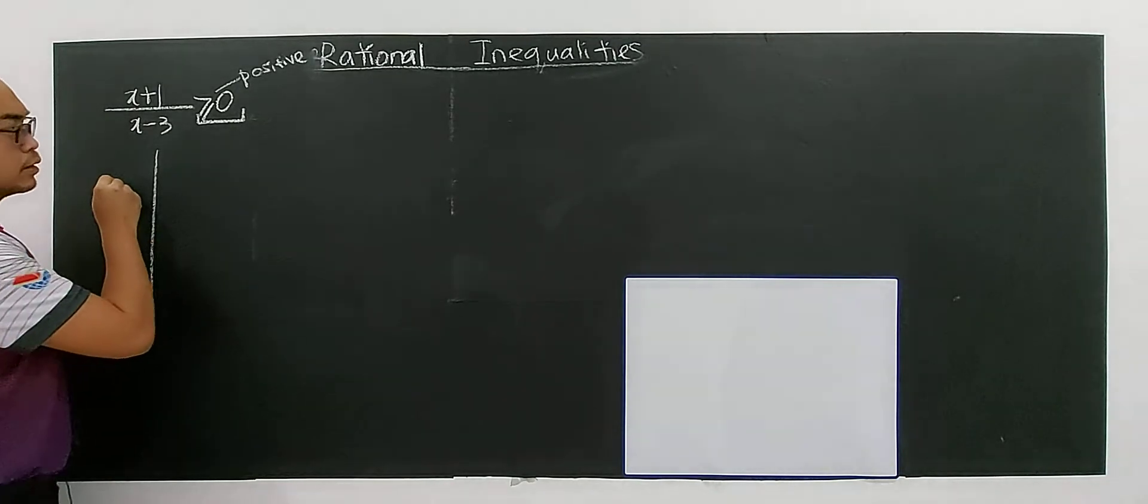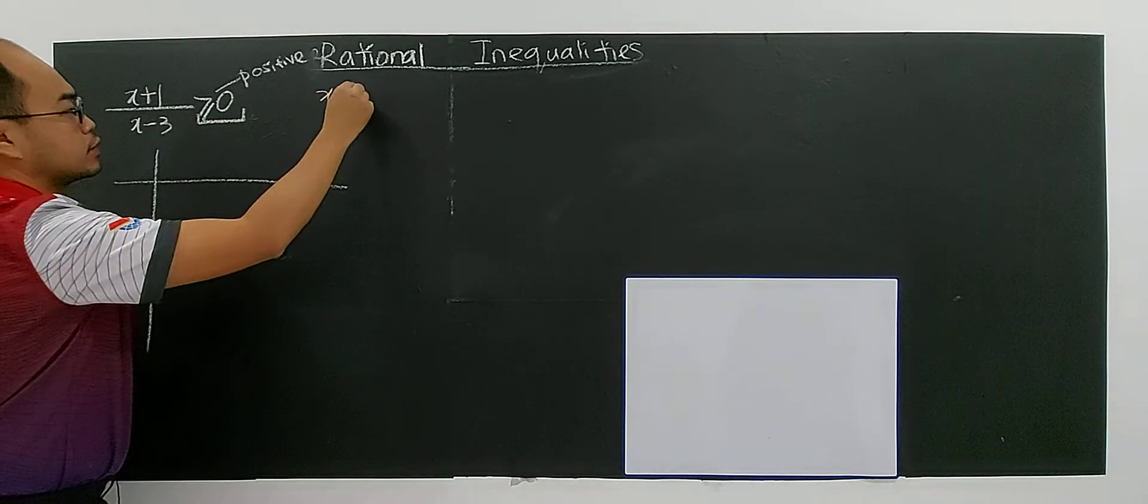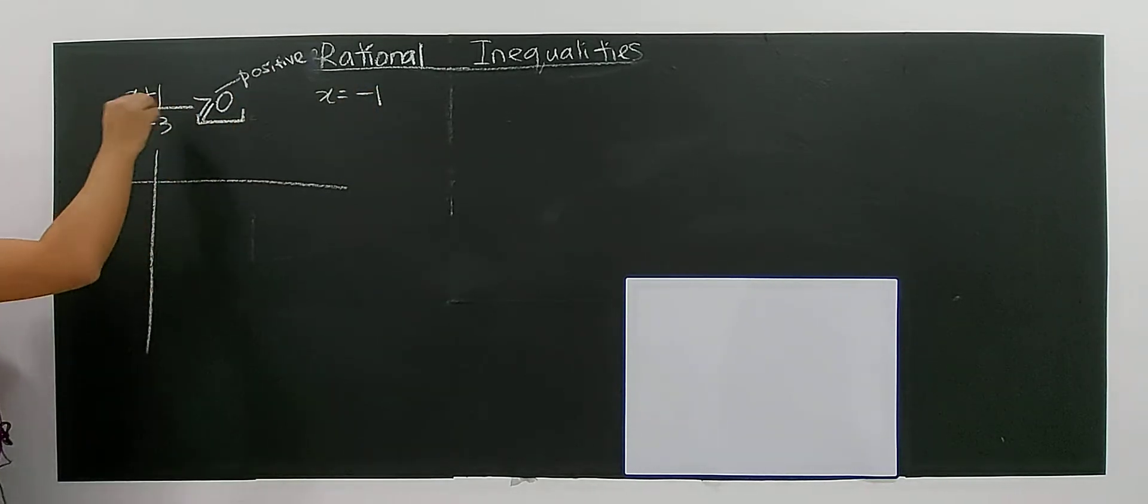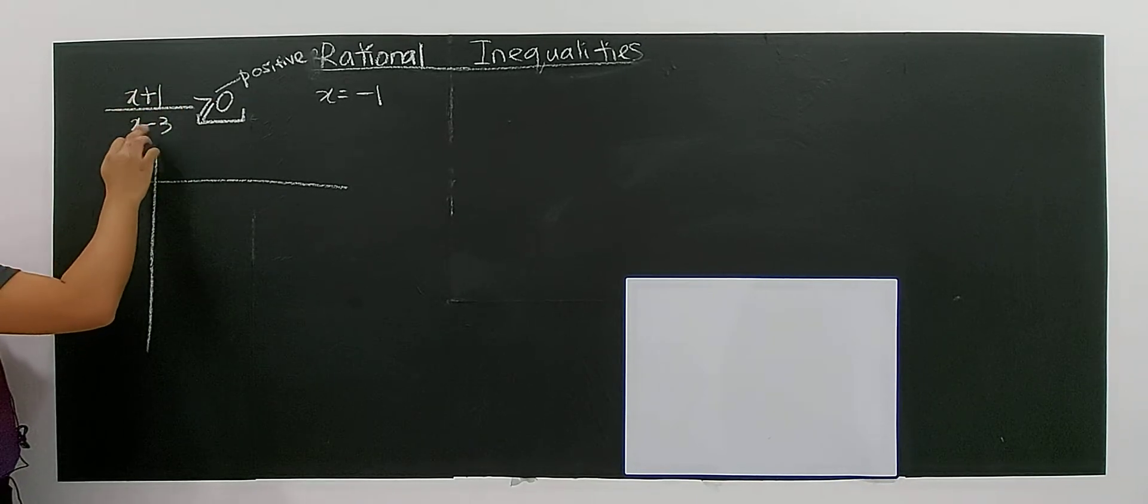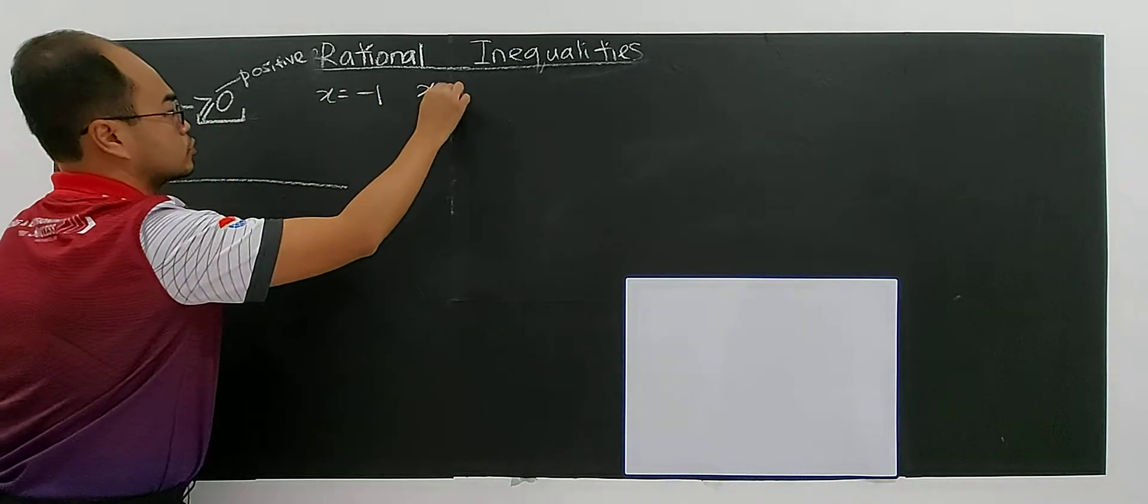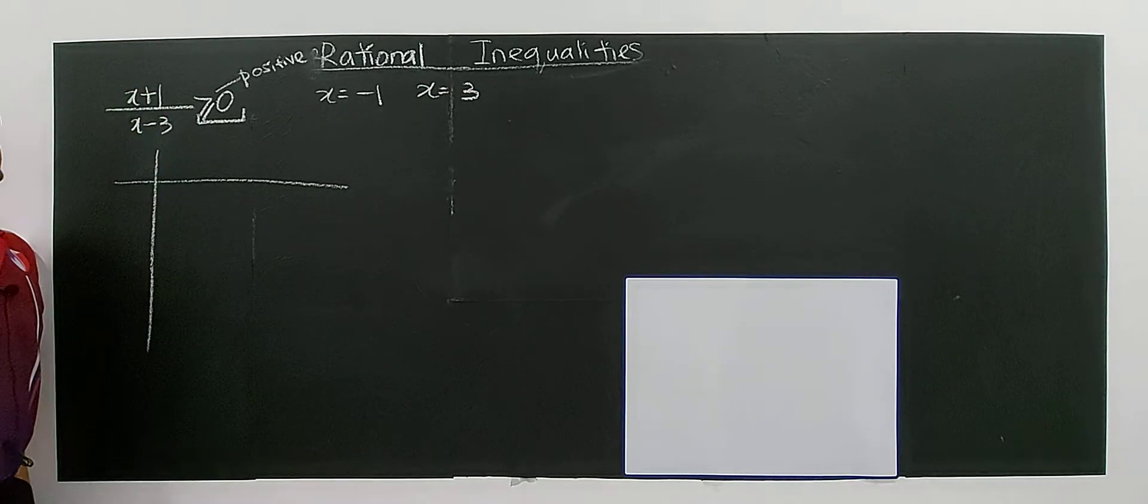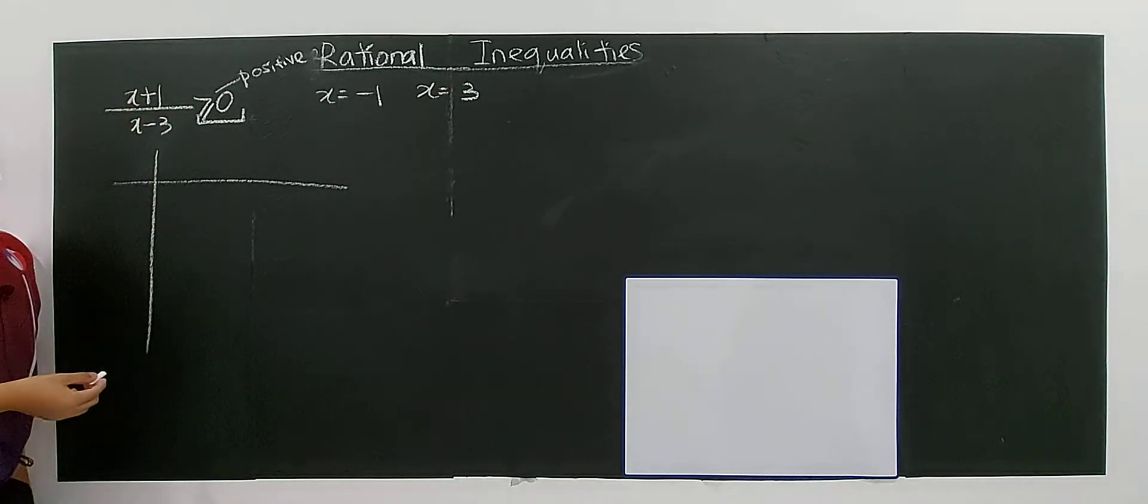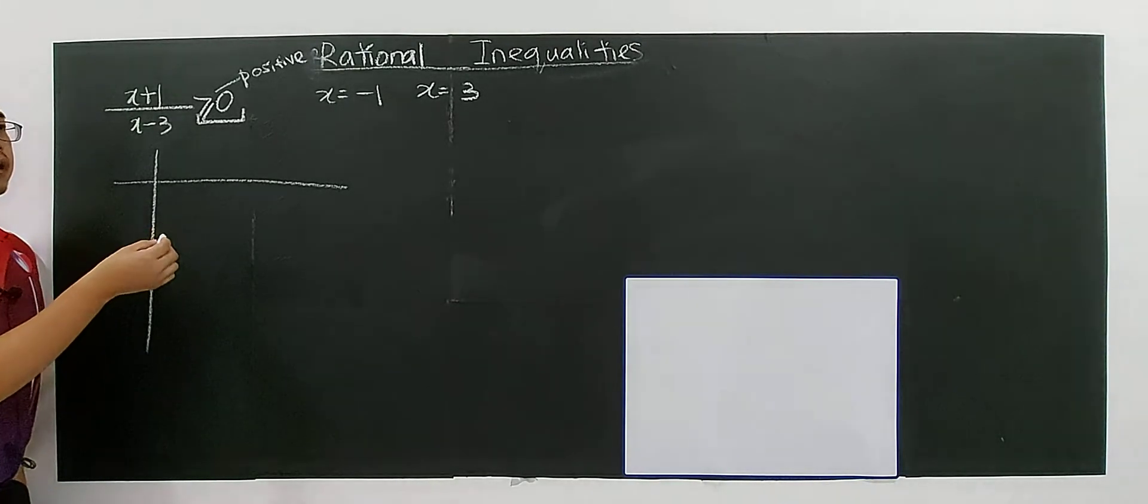You draw out a table. Then you have two critical values here: negative one and three. In your mind you know that x plus one equals zero at negative one, and x equals three.